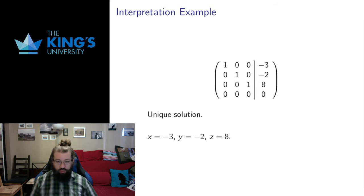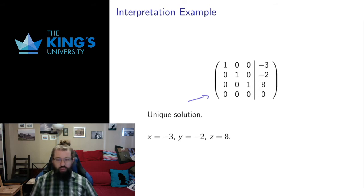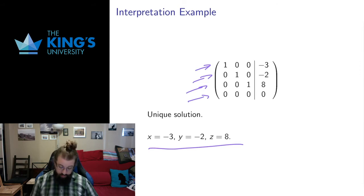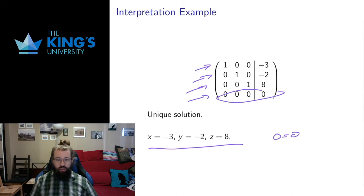Here's a matrix. This matrix is perfectly fine — it has a unique solution. There's an extra row of zeros but nothing to bother us there, because we have x equal to negative 3, y equal to negative 2, z equal to 8. All of those things we can read off from those rows, and we can ignore the 0 equals 0. This last row just translates into 0 equals 0 — it's a true statement but it doesn't add anything to the system.